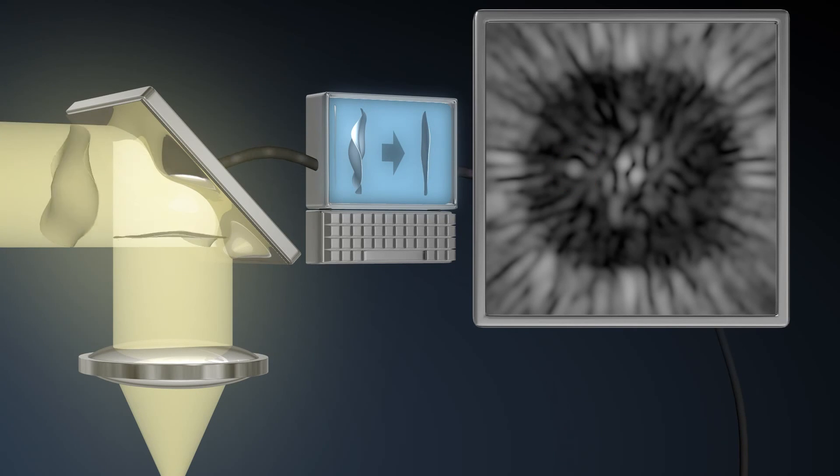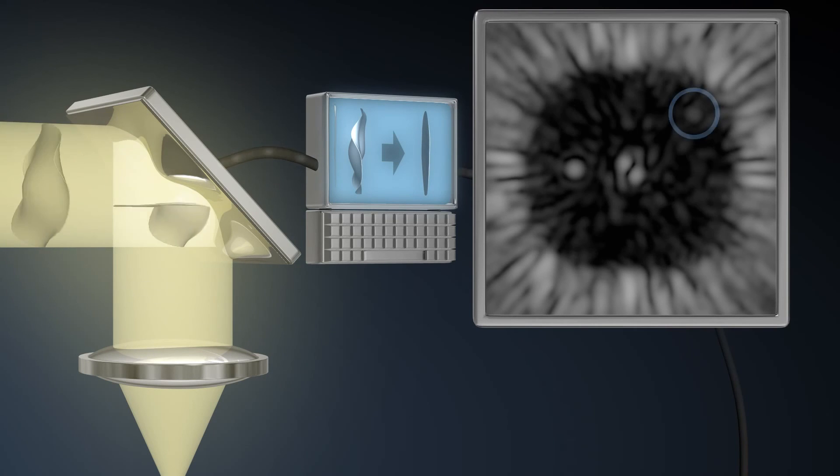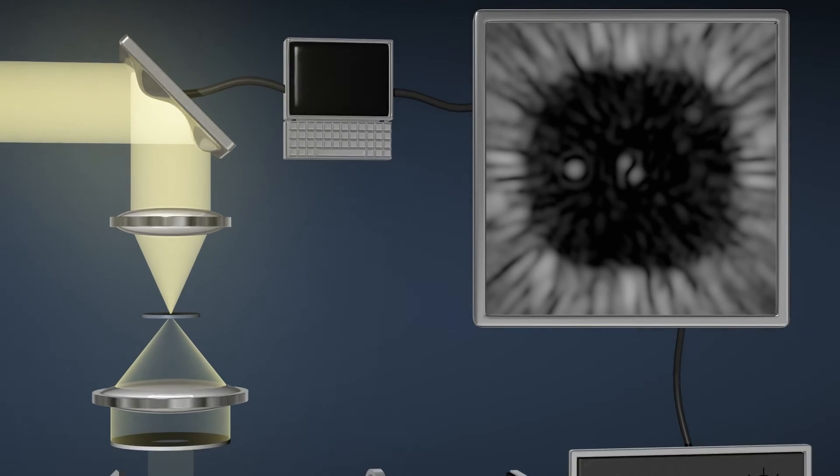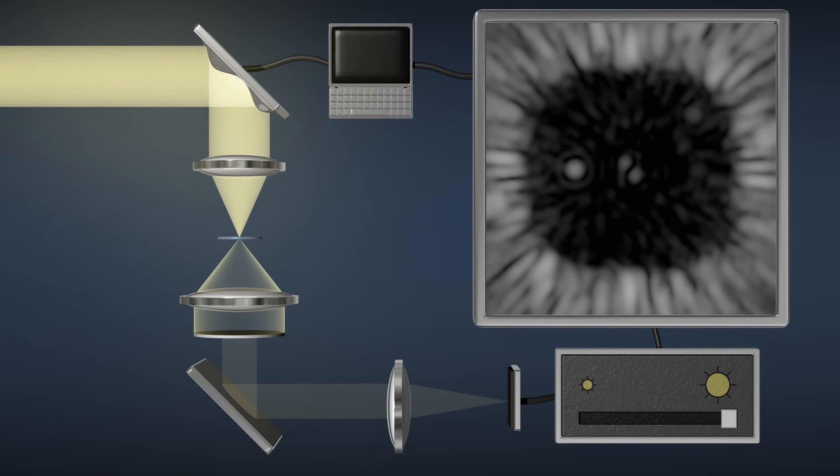Afterwards, the fainter planet also comes into view. We can now start to see objects more than a billion times fainter than the star. Deep within the glare of their star, we have discovered our two planets.